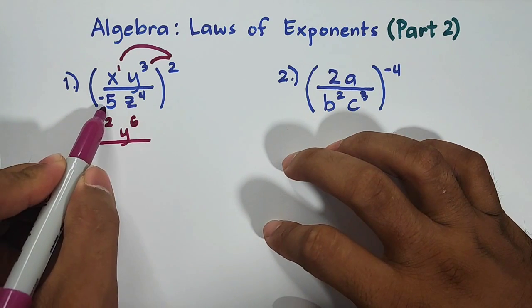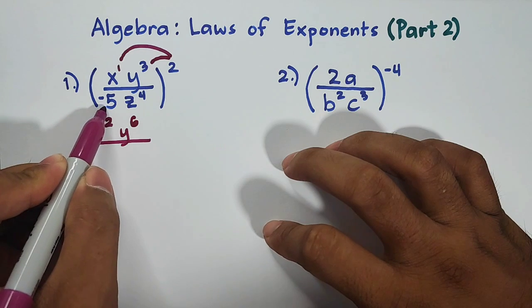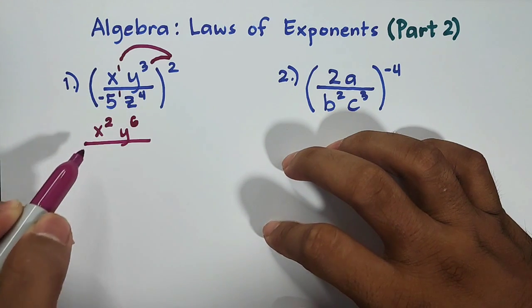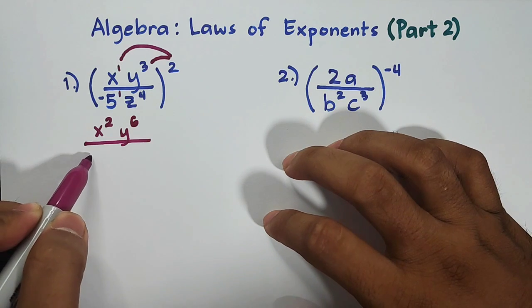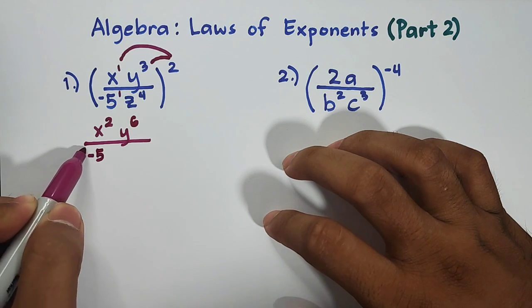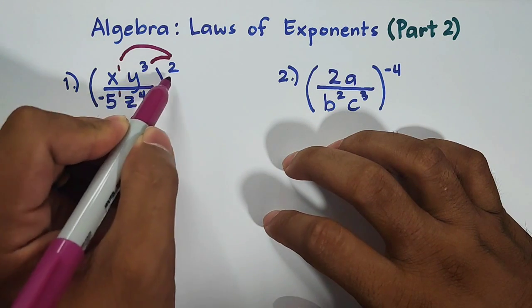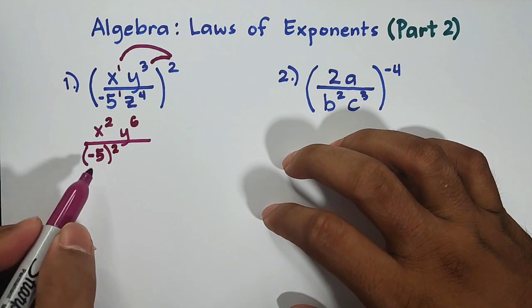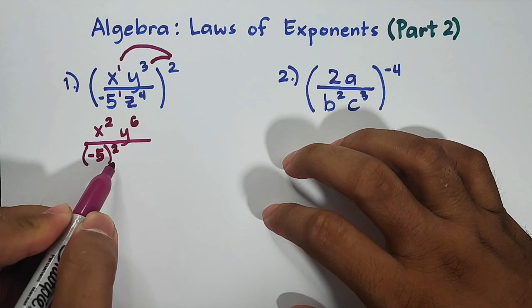Over this one, your coefficient here, which is negative 5, it also has the exponent of 1. So it will become negative 5 raised to 1 times 2, which is 2. So as you can see, your negative 5 now is raised by the second power.